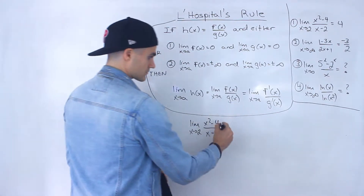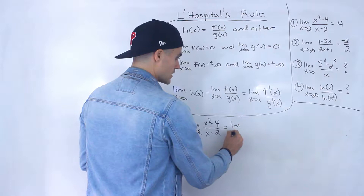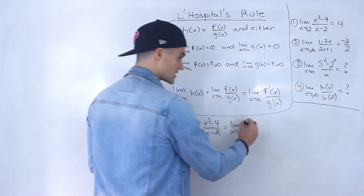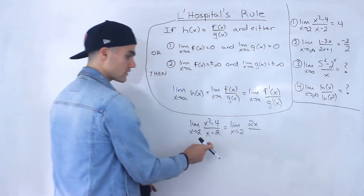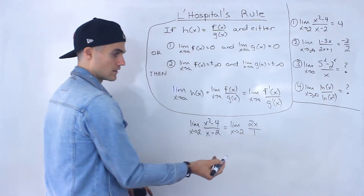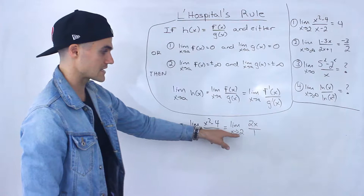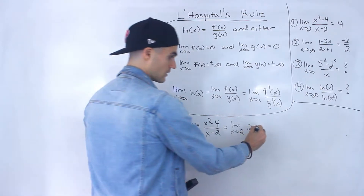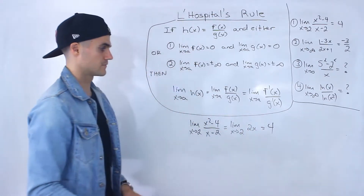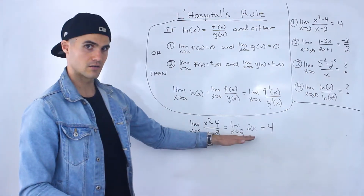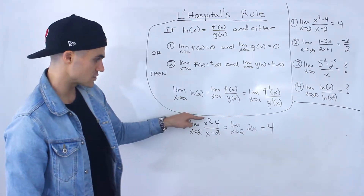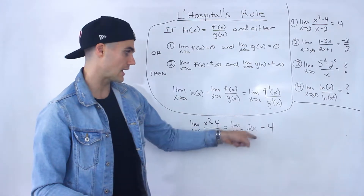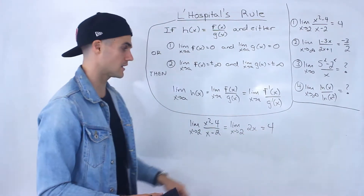So notice that we're in the 0/0 case. What we can do is rewrite this as the limit as x approaches 2 of the derivative of the numerator, which is 2x, over the derivative of the denominator, which is just 1. So we end up with the limit as x approaches 2 of 2x. We can just do a direct substitution, and that gives us 4.